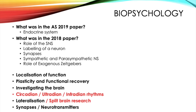Next you've got plasticity and functional recovery. Within this you need to know about plasticity and the research into it — for example, Maguire's taxi driver study. You also need to know what happens to the brain during recovery, so your different processes of recovery, for example axonal sprouting.